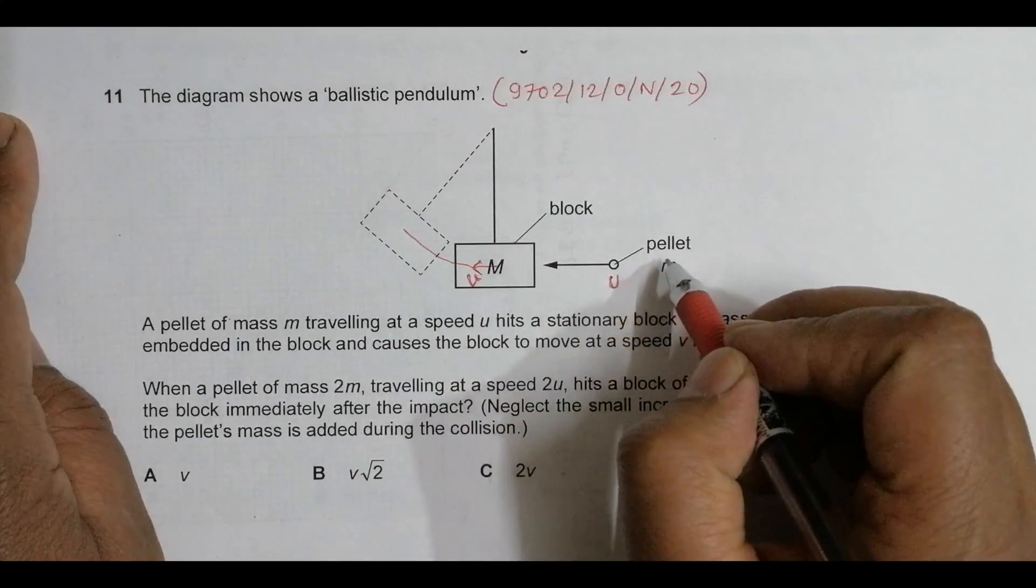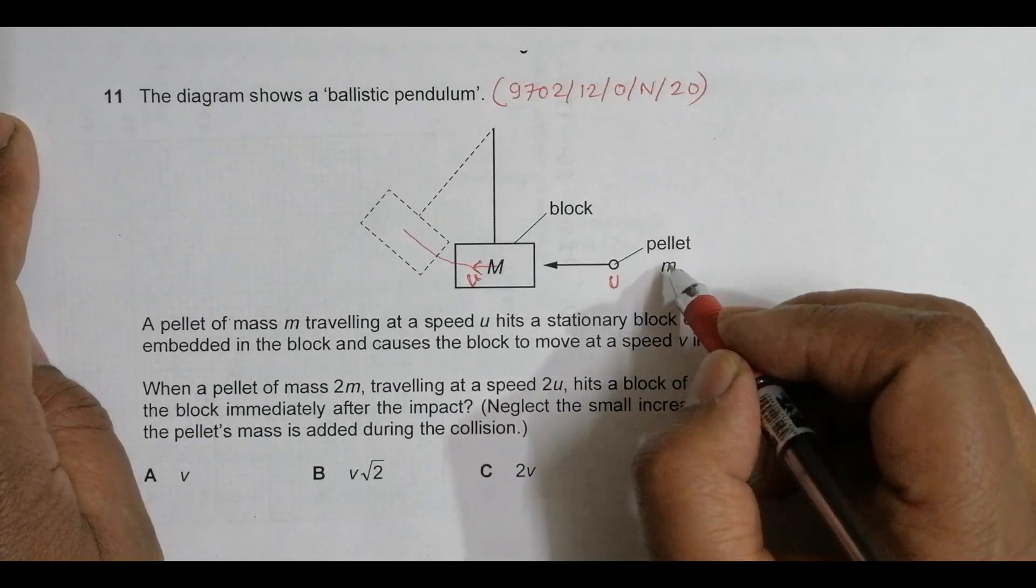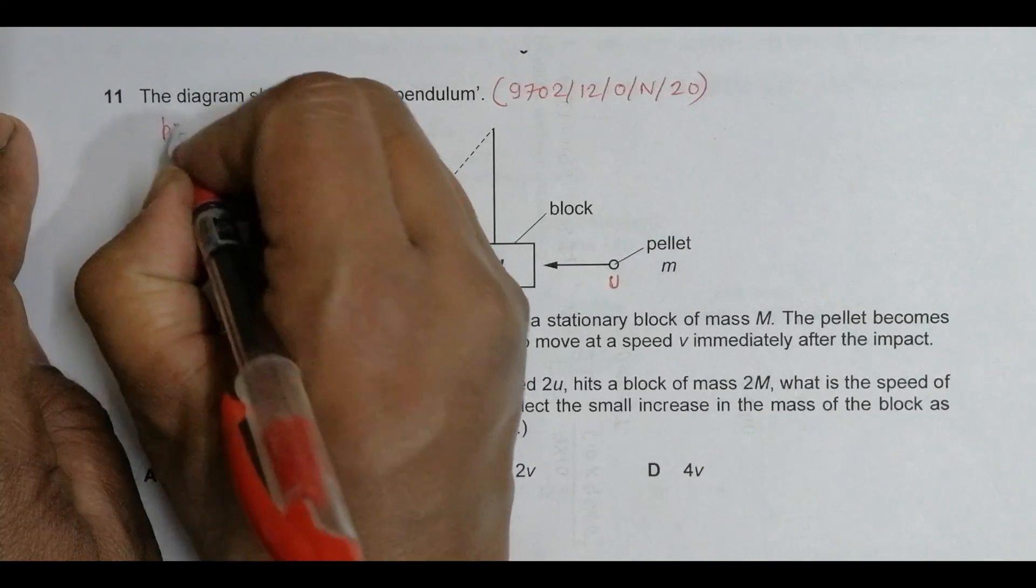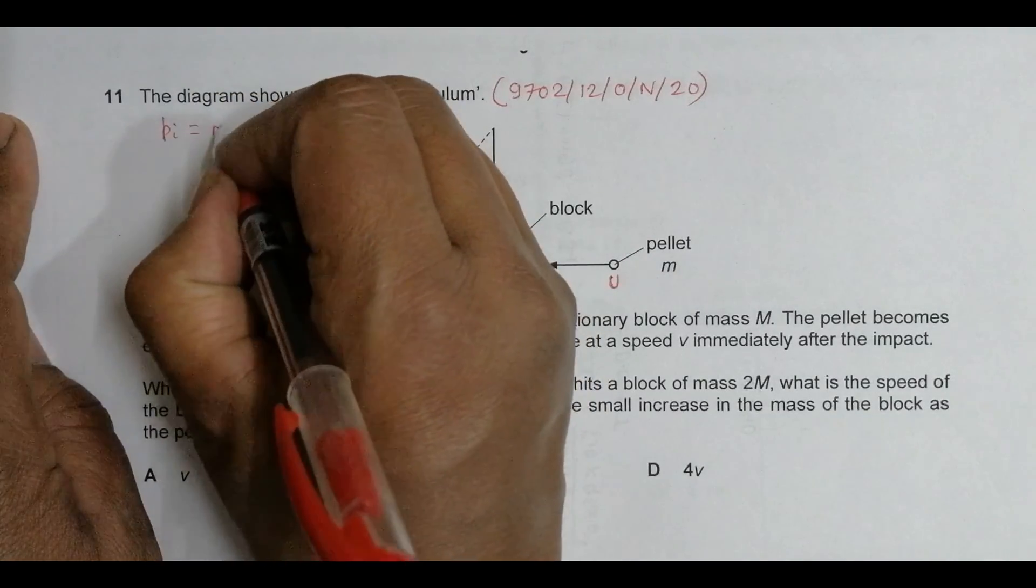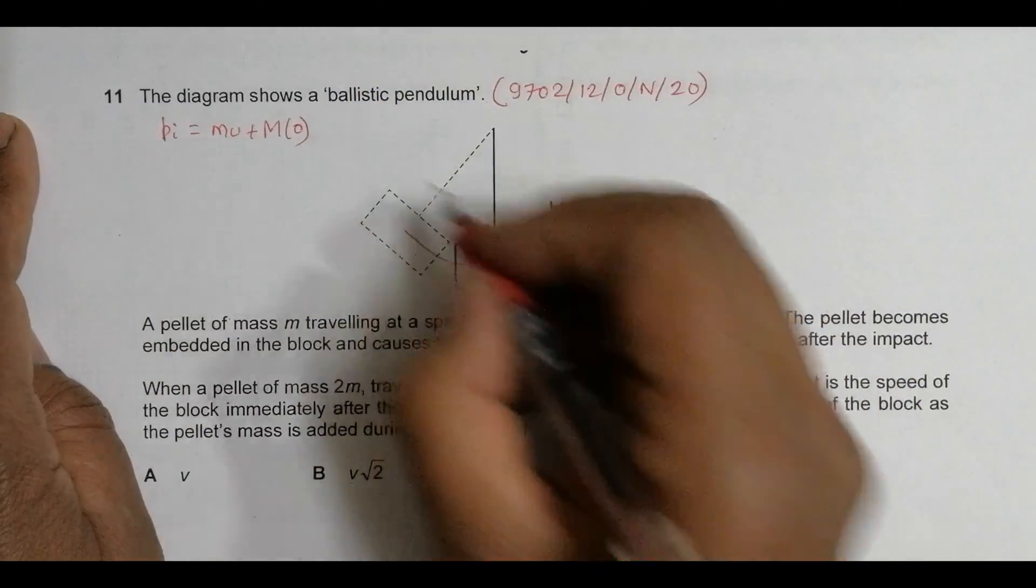The pellet is moving, so considering the total initial momentum: P_initial = mu + M×0. Since the block wasn't moving, P_initial equals mu only.